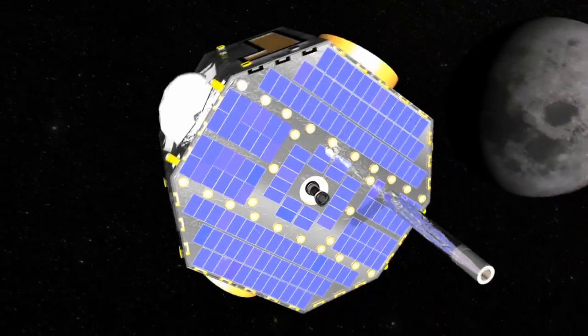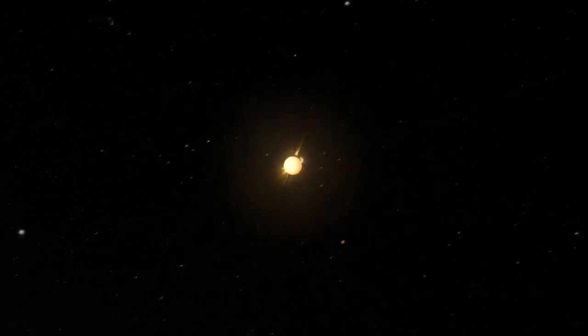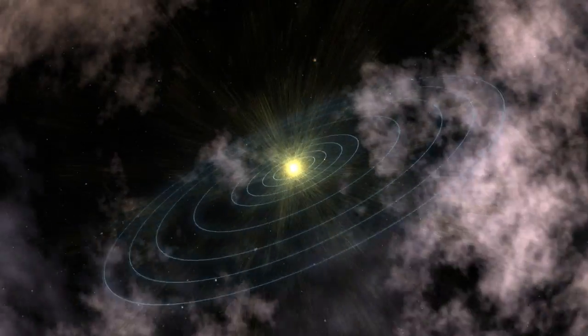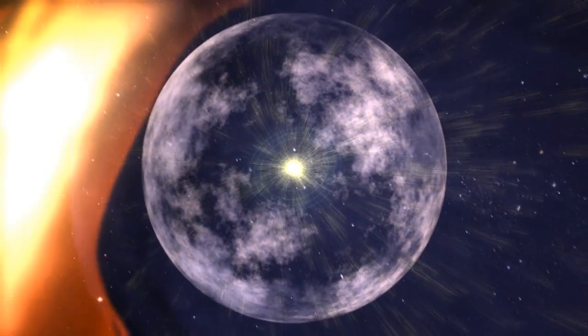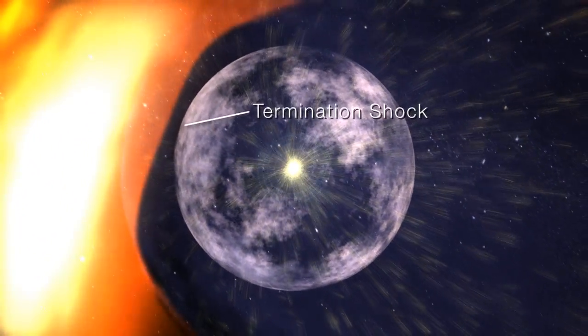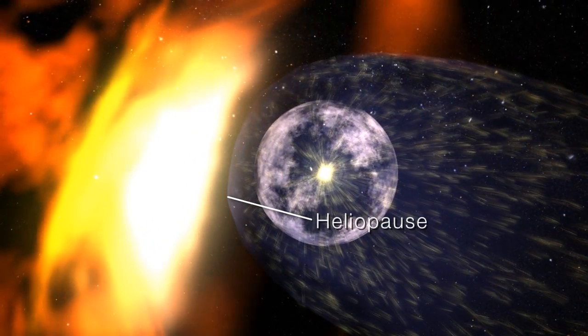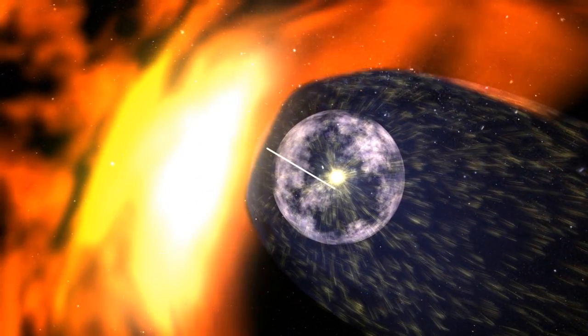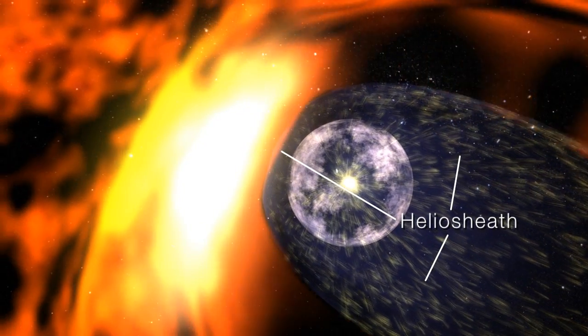IBEX looks at the very edge of the sun's reach, starting at about 8 billion miles away. The region begins with the termination shock and ends with the heliopause. Between those two is the heliosheath, a teardrop-shaped region sculpted by the pressure of the interstellar medium.